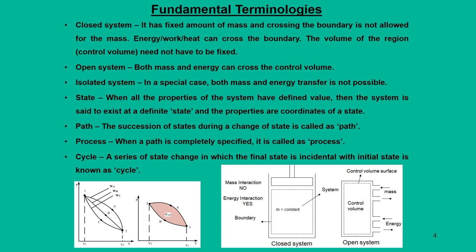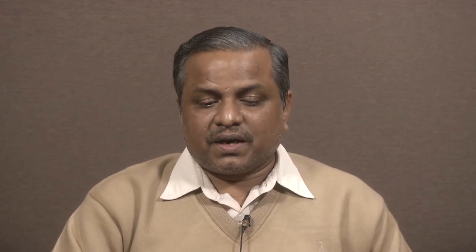When the coordinates change, there is a change of state. When there is a change of state, it has to go in a certain path — that means there is a succession of changes of state that happens for the system, and that we call it a path. If you completely define this path, we call it a process. Thermodynamically we have many processes like isothermal, isobaric, isochoric, and so many more. Mathematically, we can specify how the change of state happens when the system goes from one point to another.